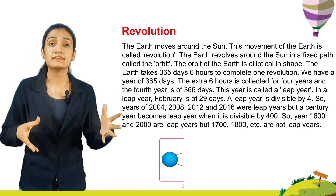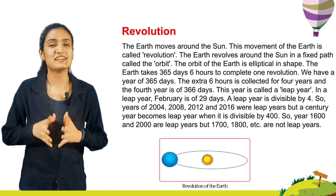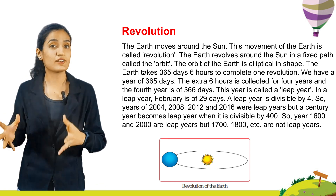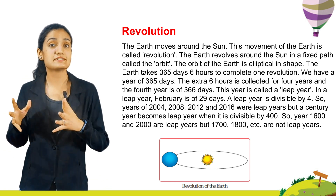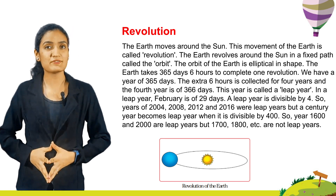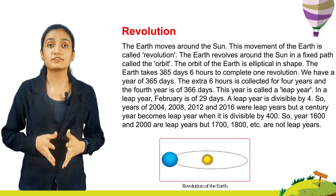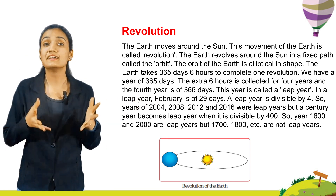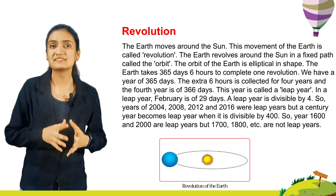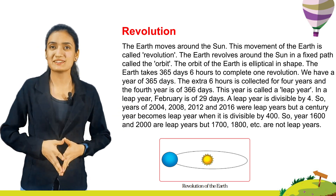Revolution. The earth moves around the sun. This movement of the earth is called revolution. The earth revolves around the sun in a fixed path called the orbit. The orbit of the earth is elliptical in shape. The earth takes 365 days and 6 hours to complete one revolution. We have a year of 365 days. The extra 6 hours is collected for 4 years and the 4th year is of 366 days. This year is called a leap year.